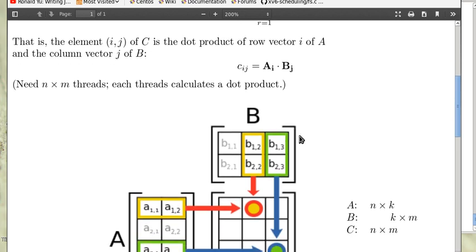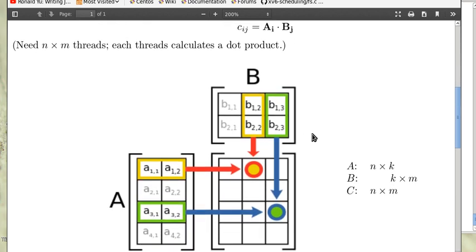Now this is an example illustrating how matrix multiplication is done. So we have this row vector of A dot this column vector of B to give this element of C.